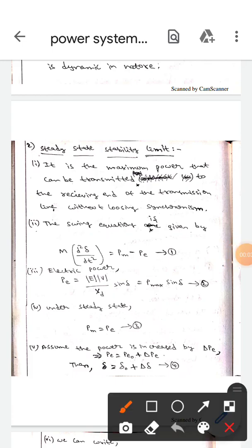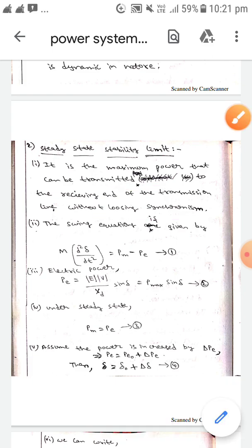Hello guys, I am Puralfine. Today we are here to discuss steady-state stability limit. It is the maximum power that can be transmitted to the receiving end of the transmission line without losing synchronism.